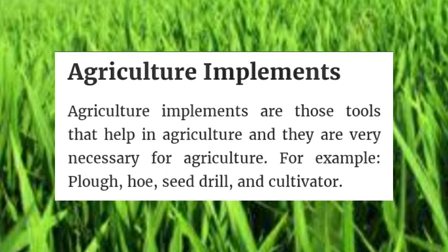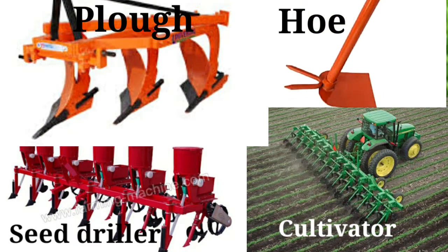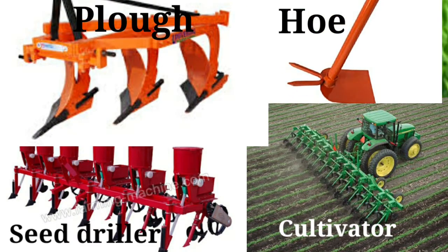What are agricultural implements? Agricultural implements are tools that help in agriculture and are very necessary for farming. Examples include the plow, hoe, seed drill, and cultivator.